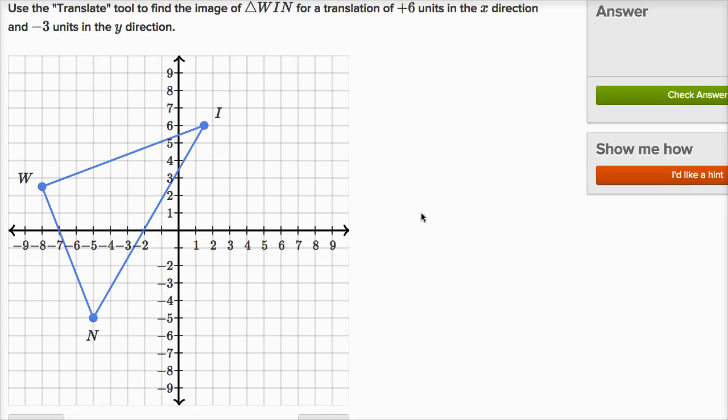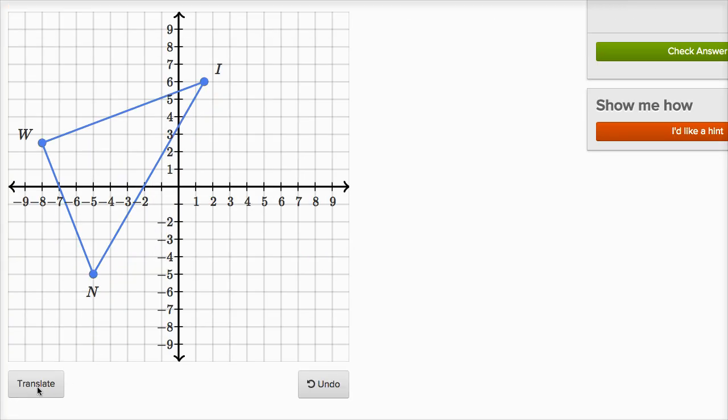All right, so we want to go positive six units in the x direction and negative three units in the y direction. I click on the translate tool.